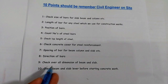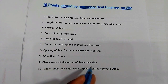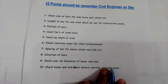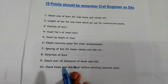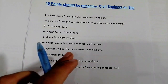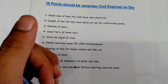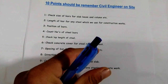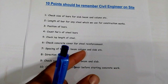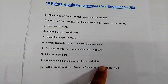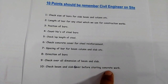The ninth point is: check the overall dimensions of beam and slab. The tenth point is: before starting concrete work on beam and column, check the cover — the concrete cover. There are small cover blocks for slab and beam, so check the clear cover before starting concrete work.